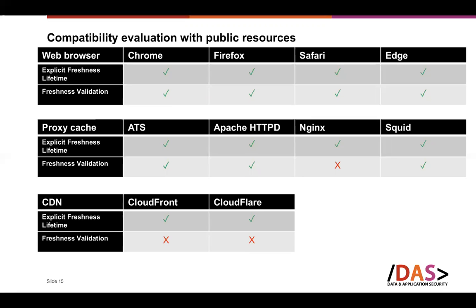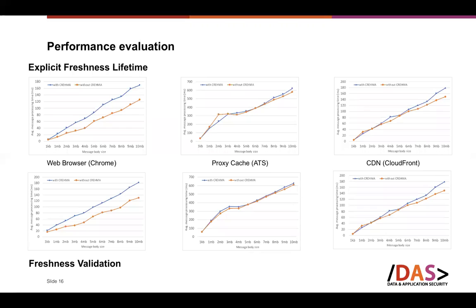In our performance evaluation, we compared CREMA-signed message flows against an unsigned baseline with no security at all. We found that CREMA adds only marginal penalty costs — just marginal delays — to the message flow.